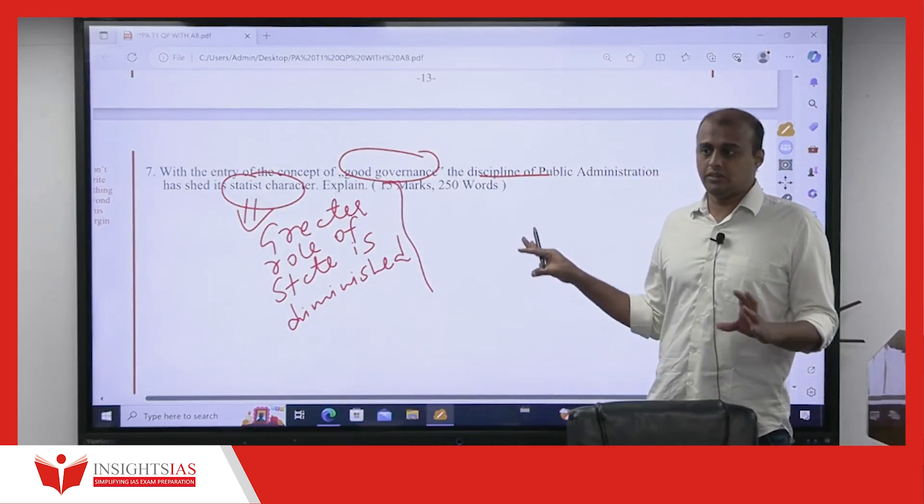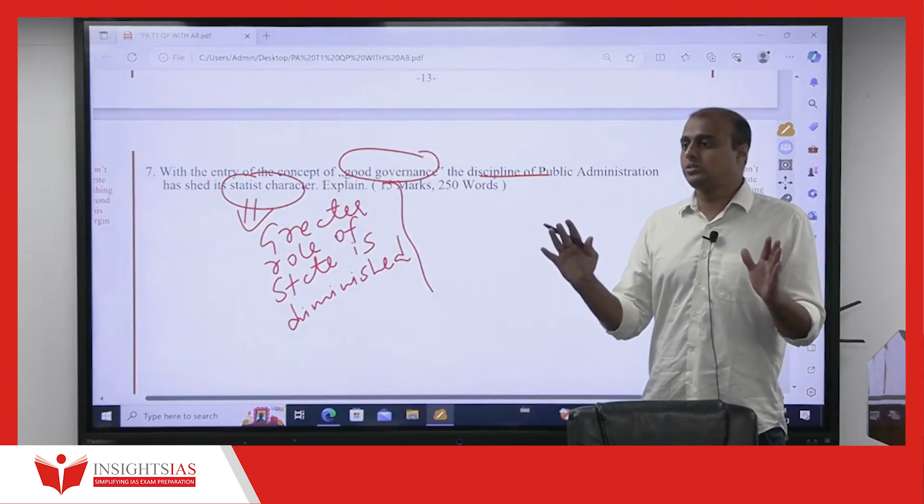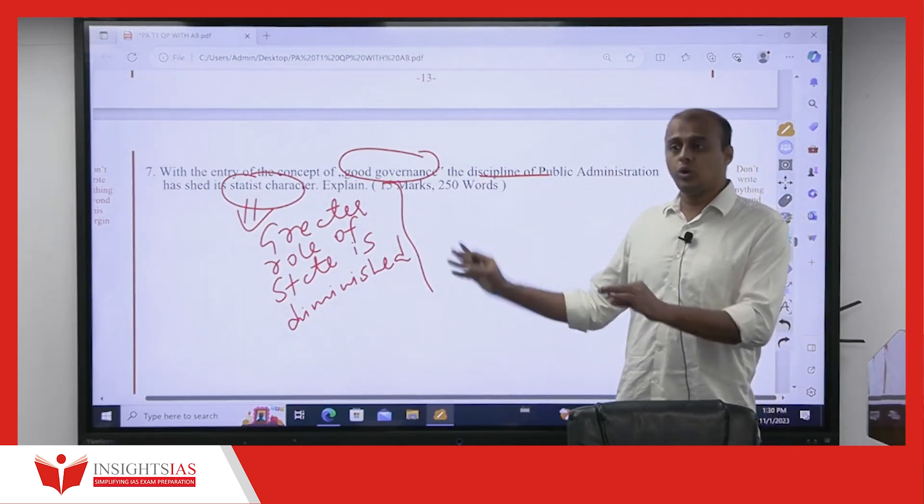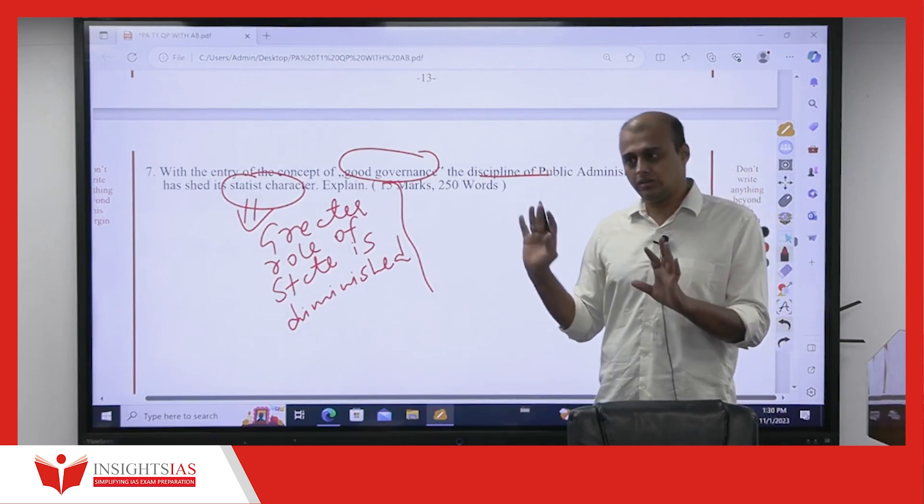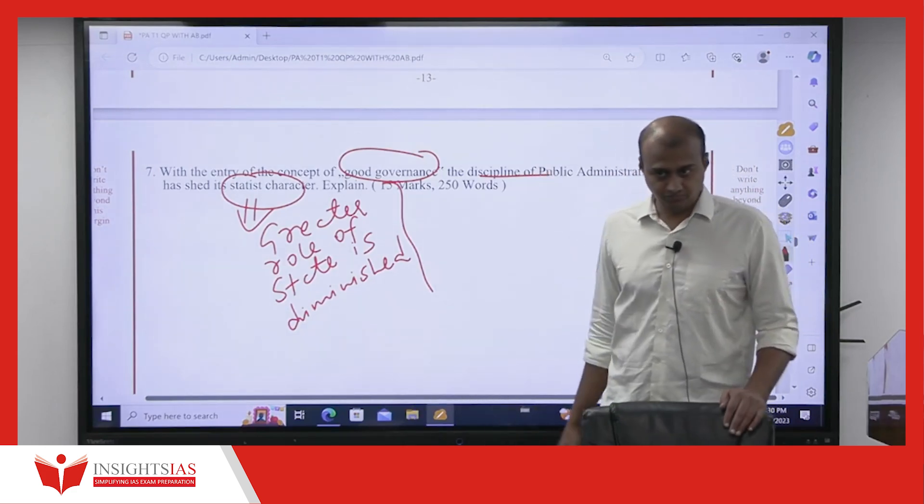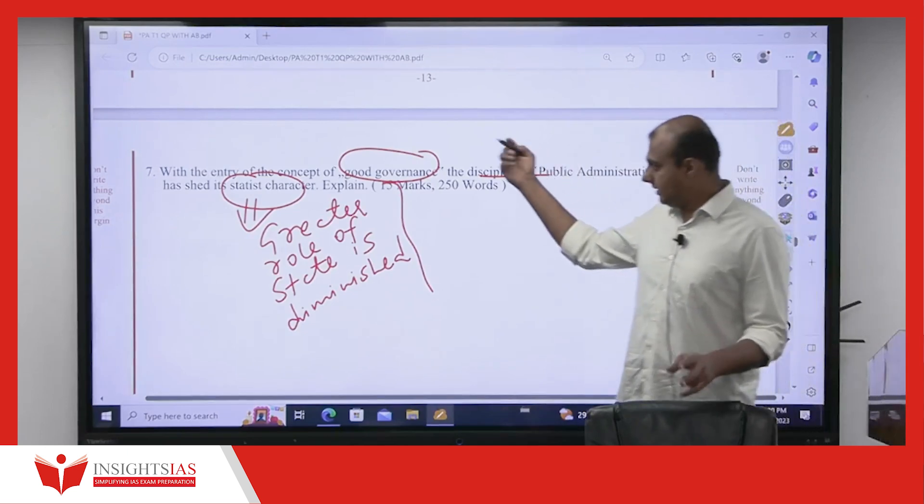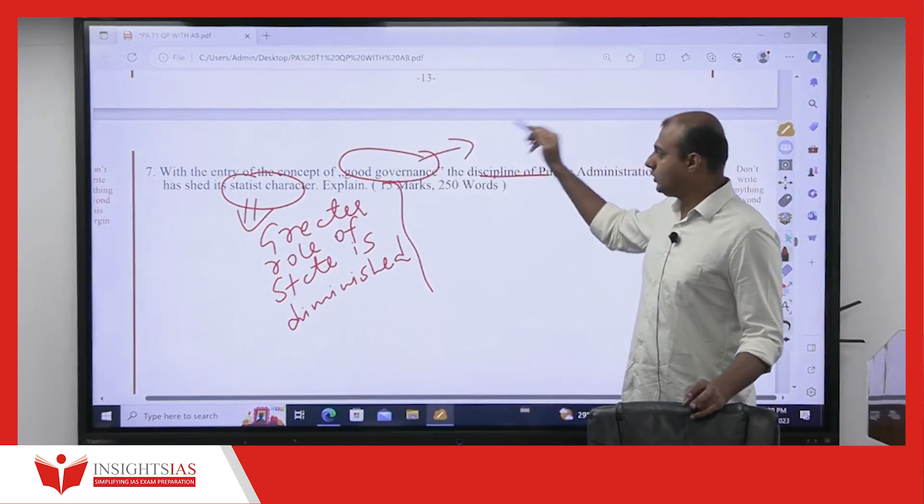Status does not mean status quo. Statist means what? Strong state. I am the only one. Monopoly, that whole concept is gone. That is what you call good governance. When you say good governance, you have two aspects.